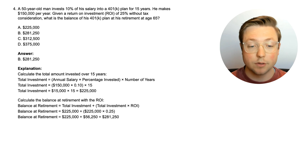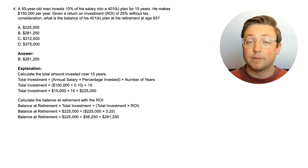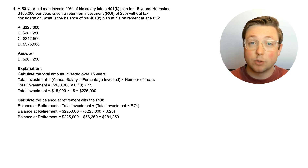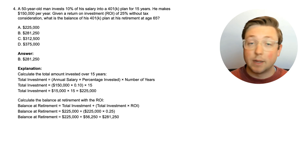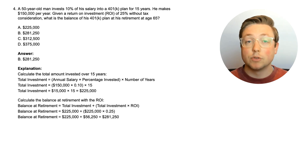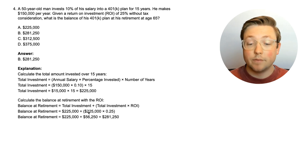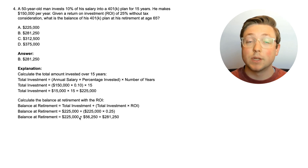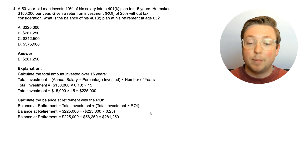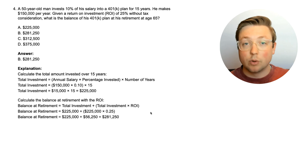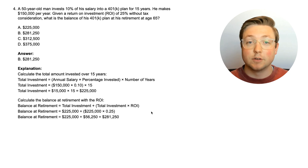The answer is $281,250. First, we figure out the total investment: annual salary multiplied by the contribution percentage multiplied by the number of years — so $150,000 times 10% times 15 years equals $225,000 invested. To find the balance at retirement, we already have the ROI, so we take the total investment of $225,000 and add the investment multiplied by the ROI of 25%, which is $56,250, giving us $281,250. A 100% ROI means you doubled your investment — anything above 100% means you're getting a ton extra.